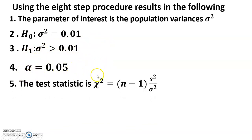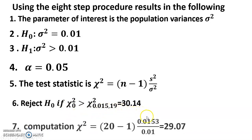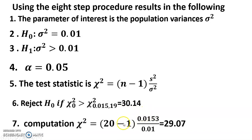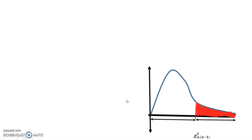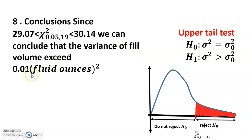Reject H0 if chi square is greater than chi square (0.05, 19) equals 30.14. Computation: chi square equals (20 minus 1) times 0.0153 divided by 0.01 equals 29.07. Conclusion: since 29.07 is less than 30.14, we do not reject H0. We cannot conclude that the variance of fill volume exceeds 0.01 fluid ounce squared.